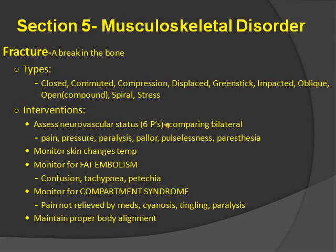Now we go on to fracture — a break in the bone. There are different types: closed, open (also called compound), and spiral. For interventions, you want to assess neurovascular status using the six P's: pain, pressure, paralysis, pallor, pulselessness, and paresthesia. Compare bilaterally and monitor skin for temperature changes. Key complication to think of with fracture is fat embolism — a piece could come off and block. Signs and symptoms are confusion, tachypnea, and petechiae. Also monitor for compartment syndrome, especially if you put a cast on. Signs and symptoms of compartment syndrome are pain not relieved by medication, cyanosis, tingling, and paralysis — mainly pain not relieved by medication.